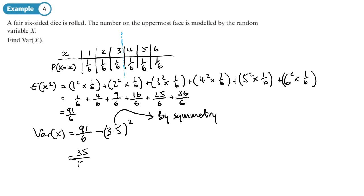Fine to leave it like that as it's exact because as a decimal it's like two point nine one six recurring. So I could do it like that but since this is exact I'm going to leave it like that. So there we go, there's the variance.